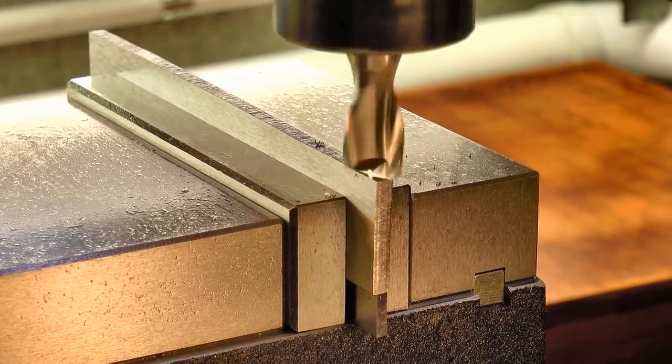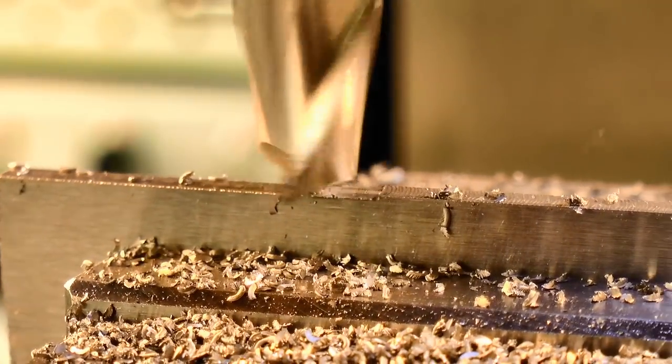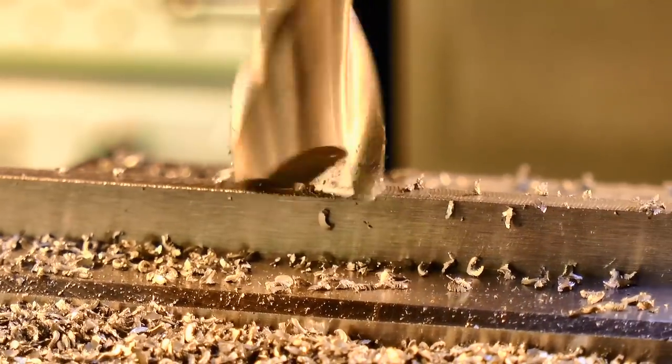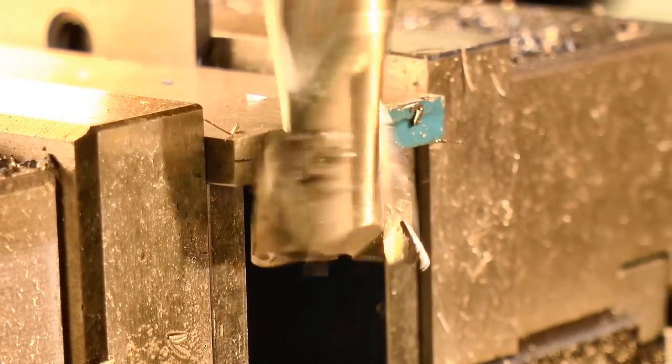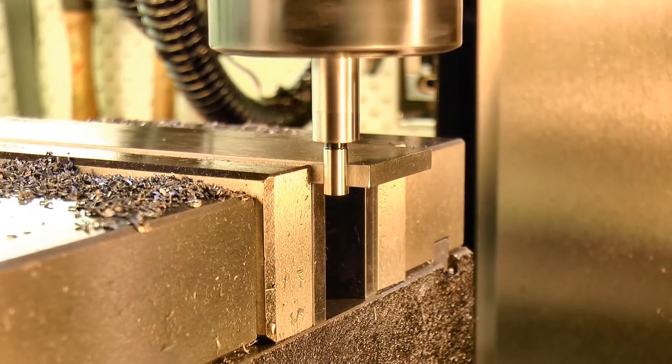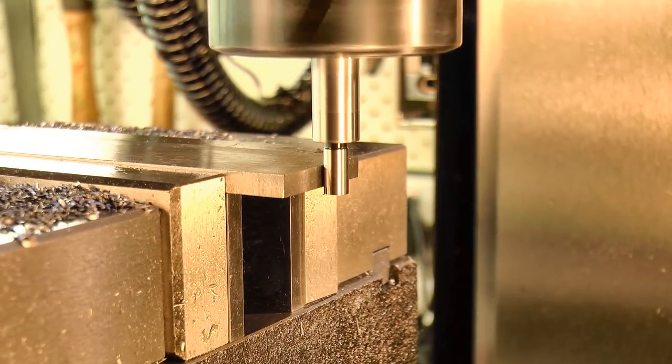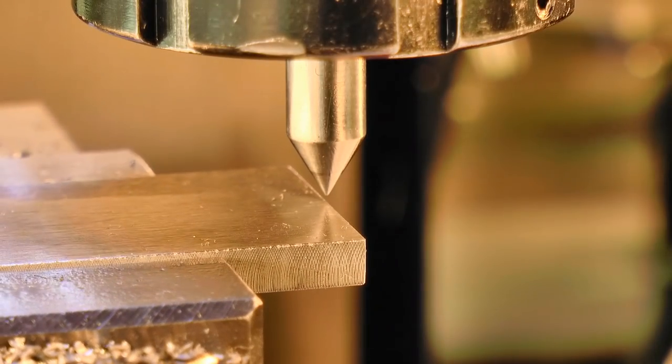I cut off a piece of stock, and started the job by squaring it up on the mill. And then I found the edge, and using the DRO, located and drilled the end holes that will define the central slot.